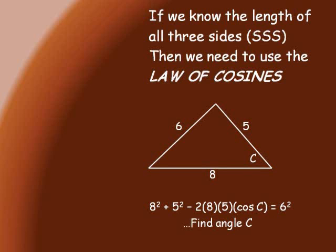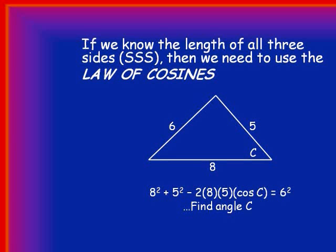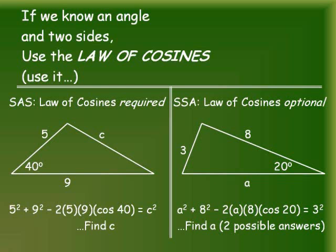If we know the length of all three sides, then we need to use the law of cosines. If we know an angle and two sides, that's the case for the law of cosines. If we know the length of all three sides, then we need to use the law of cosines. If we know an angle and two sides, you can use the law of cosines.